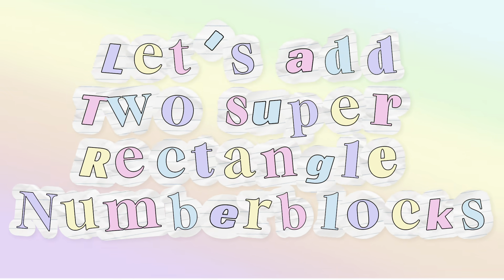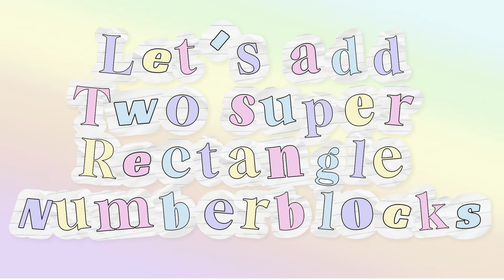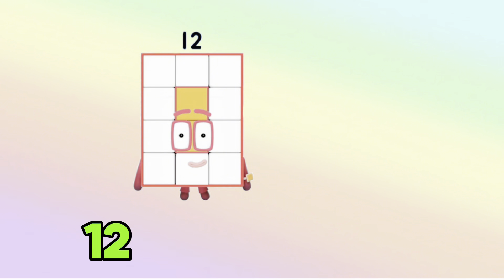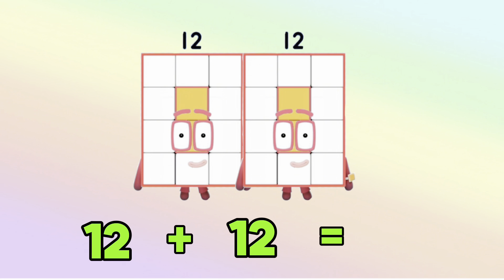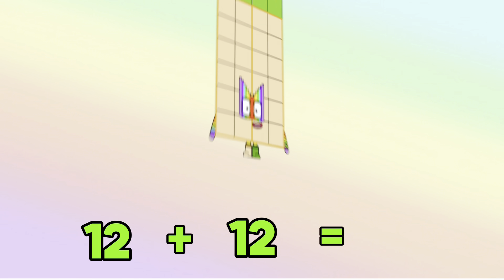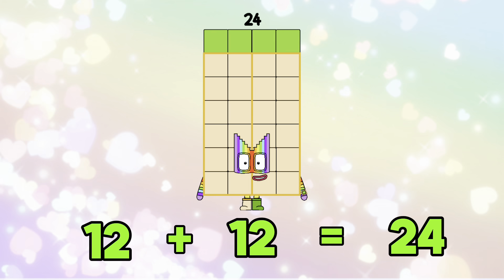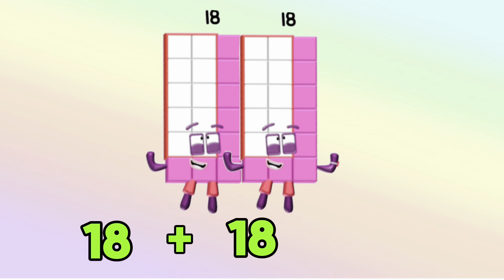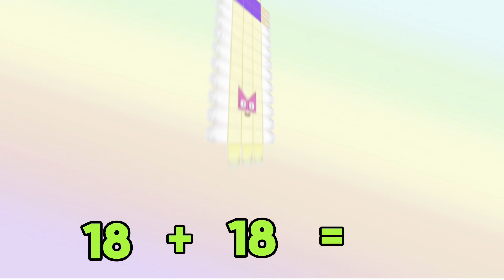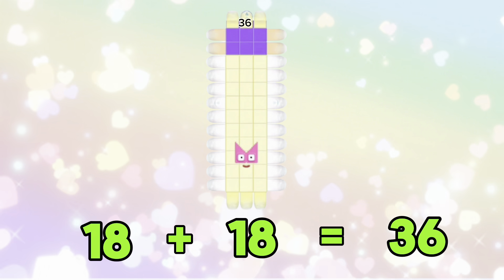Let's add two super rectangle number blocks. 12 add 12 is equals to 24. 18 add 18 is equals to 36.